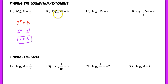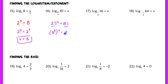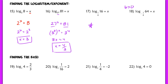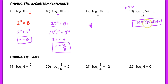For number 16: 27 raised to the x power should equal 81. Rewriting both sides: 3 to the 3rd raised to the x equals 3 to the 4th, so 3x equals 4, and x equals 4/3. For number 18: since the base is negative, and our definition requires the base to be positive, there is actually no solution to this equation. You cannot raise negative 1/4 to any power and get positive 64. Always check that you have a positive base and a positive argument before solving.